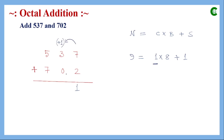Next, three plus zero equals three, and adding the carry gives four. Four is less than eight, so in this position the result is four with no carry to the next significant bit.